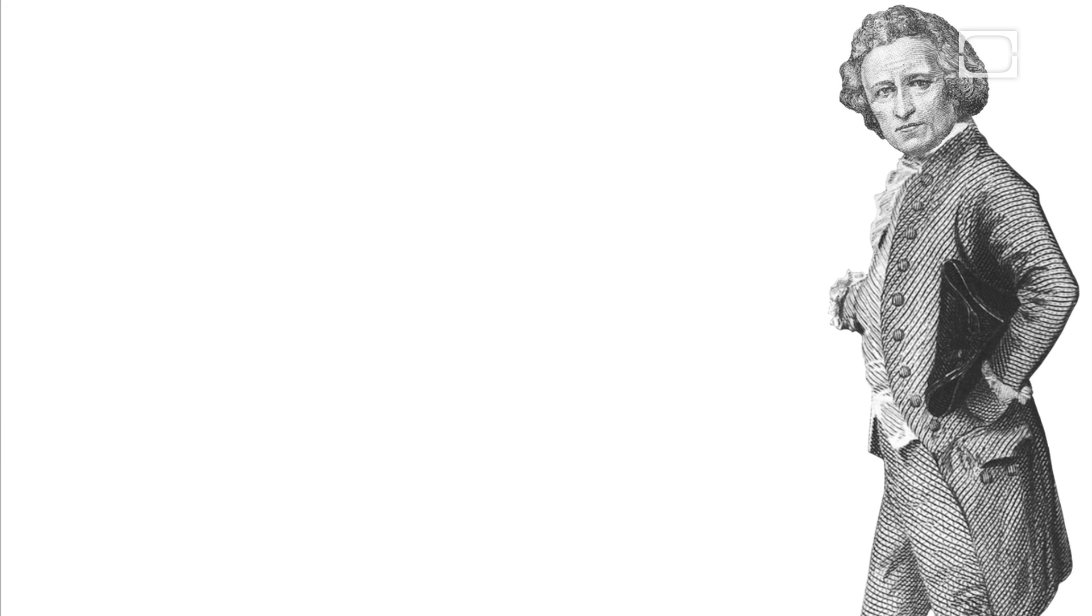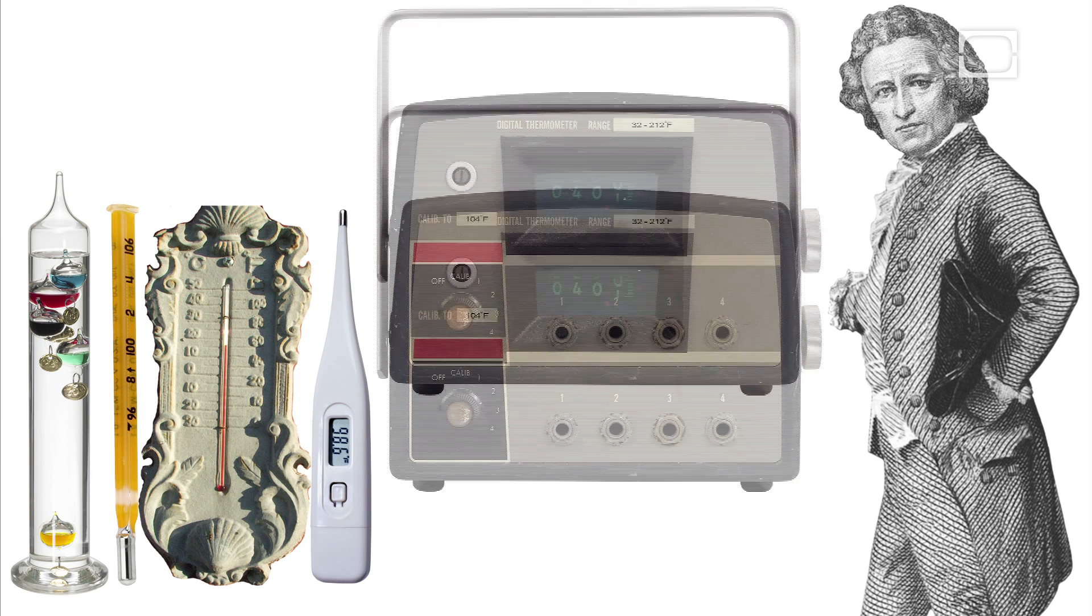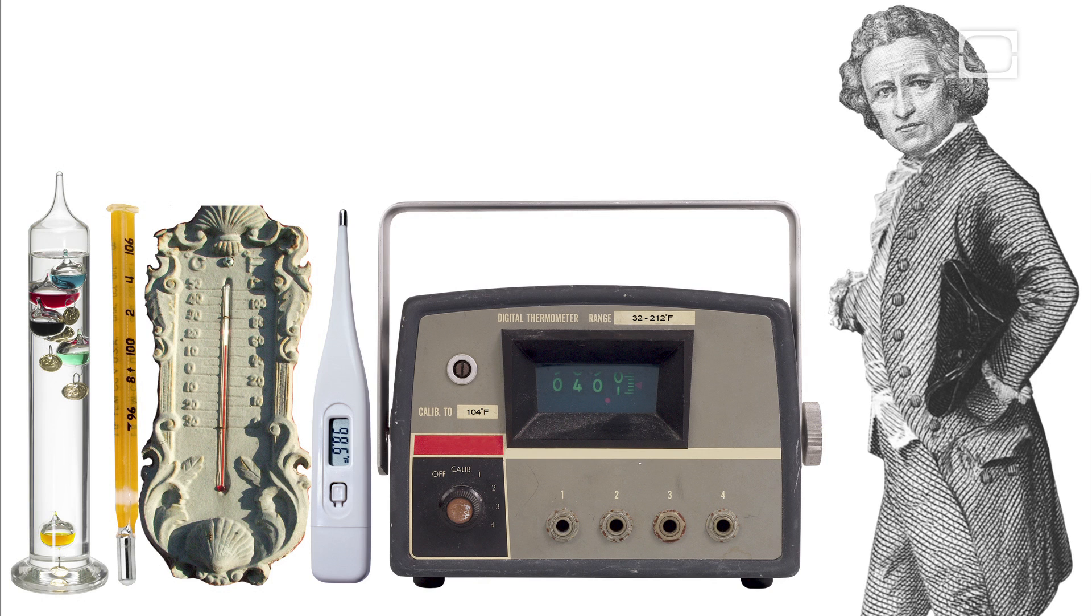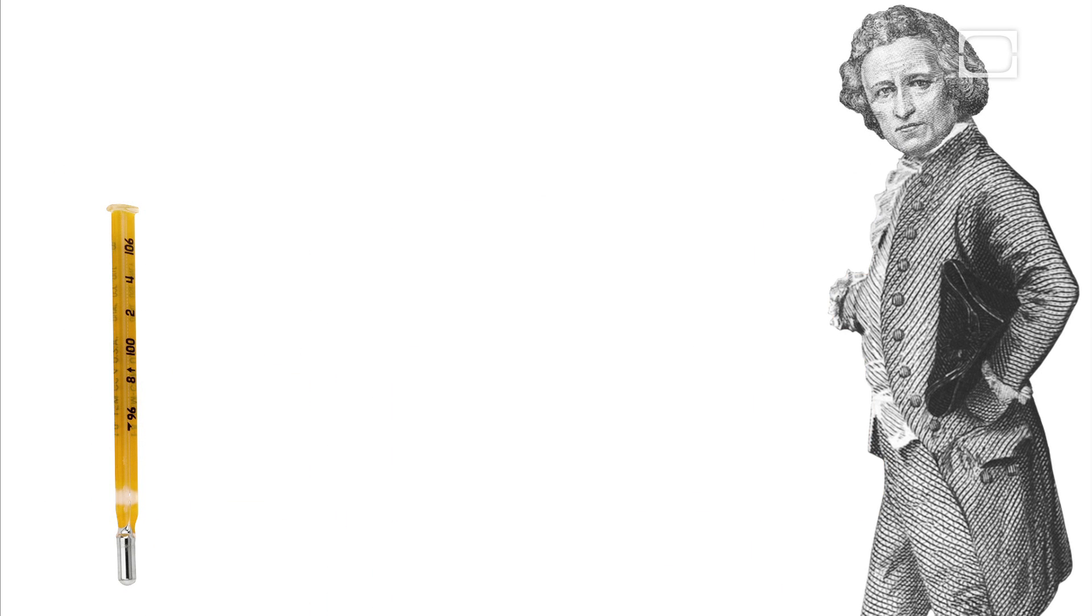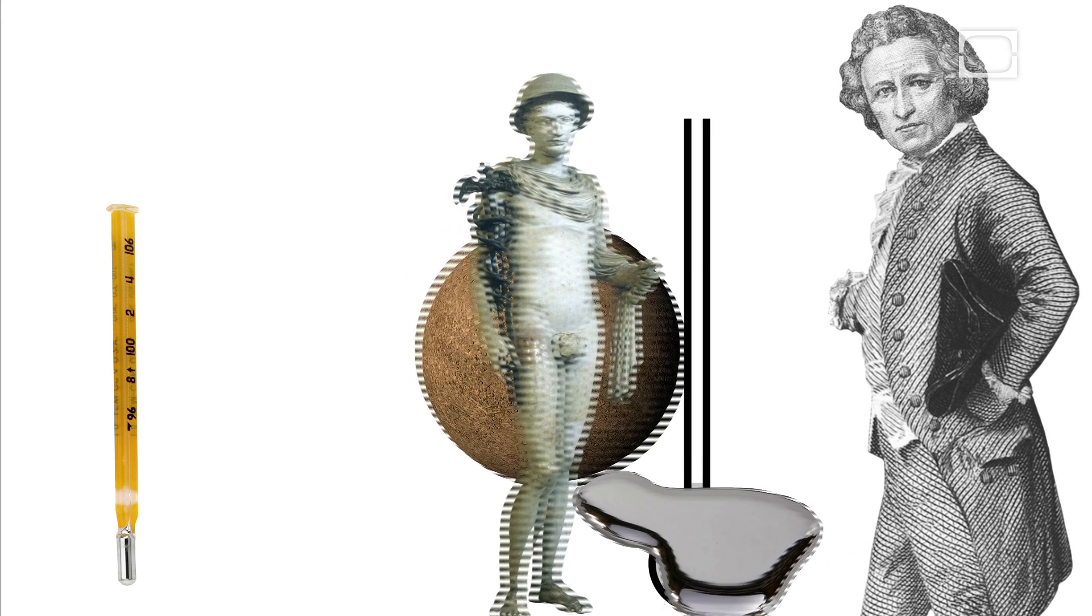Daniel knew this, and he created several new types of thermometers. His first devices used alcohol, but the most famous of his thermometers used mercury in a glass tube.